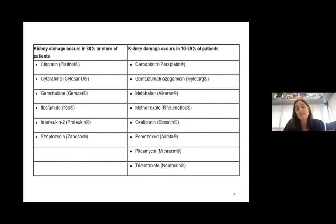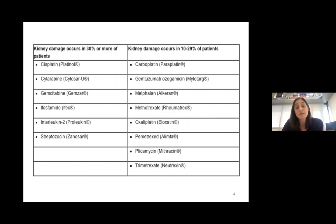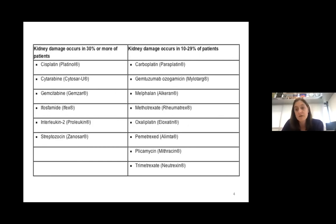Drug-induced AKI is also a major problem. Most people in pharmacology and toxicology will tell you that one of the main things screened for when putting drugs on the market is kidney injury. These are a list of drugs that cause acute kidney injury — on the left, those that cause it in 30% or more of patients; on the right, 10 to 30% — including chemotherapy agents. That is the type of kidney injury my lab studies, and we mainly study cisplatin.